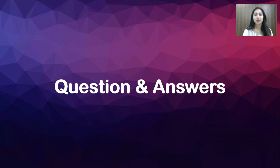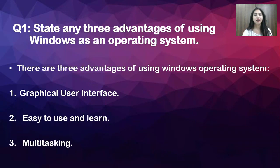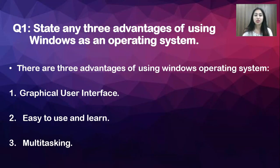Now let's look at the question answers related to these two topics — operating system and search box — from your textbook exercise. For the first question, the answer is: there are three advantages of using Windows operating system. First is graphical user interface (GUI). Second is easy to use and learn — you can use your operating system using the mouse very easily. Third is multitasking — you can use many applications at a time using Alt+Tab.